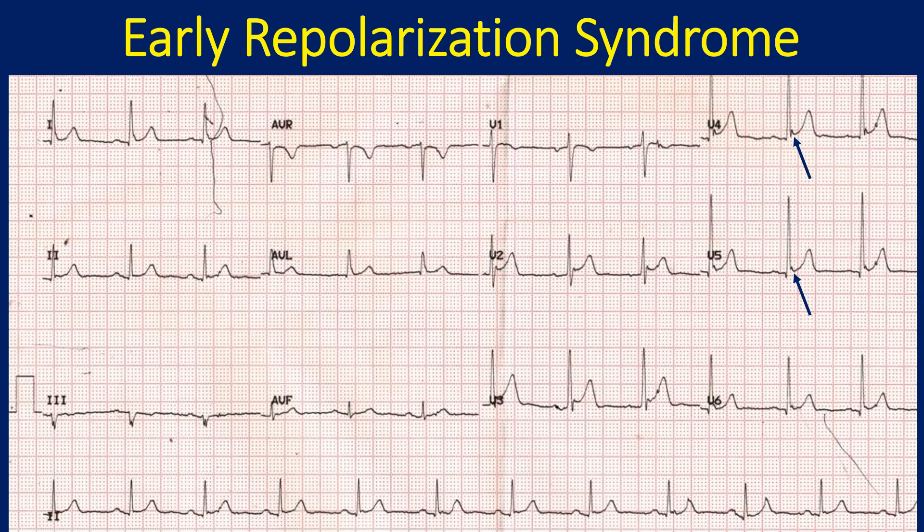ECG showing early repolarization syndrome. Concave upwards ST segment elevation with a notch at the end of the QRS complex, or a slurring of the terminal QRS seen in lateral leads, is characteristic of early repolarization syndrome. This one apparently belongs to Type 1 described above.